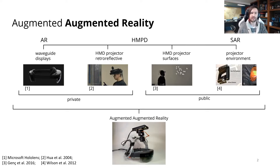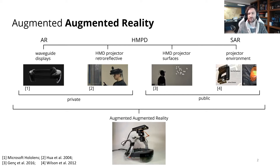Each approach has its own advantages and disadvantages. For example, some render augmentations privately for only the user using the AAR display, while others augment the world directly, making it public and viewable to any other user co-located in that space. We take aspects of all of these systems and combine them with a unified framework. This allows us to physically augment the environment publicly with an ad-hoc steerable projector, while also allowing us to render augmentations privately inside the headset, ultimately allowing us to augment augmented reality.